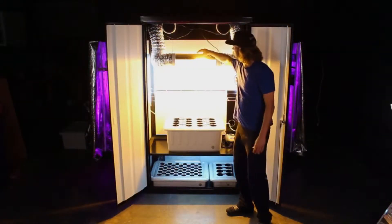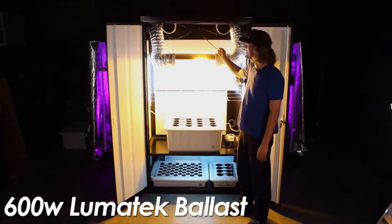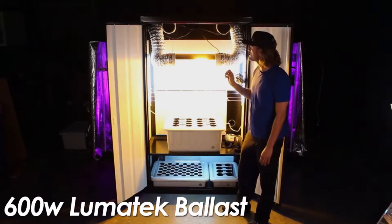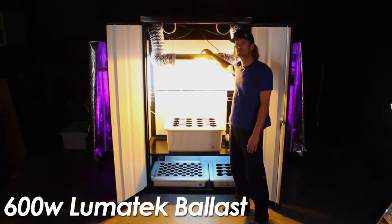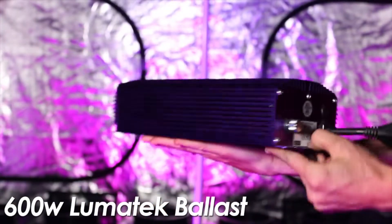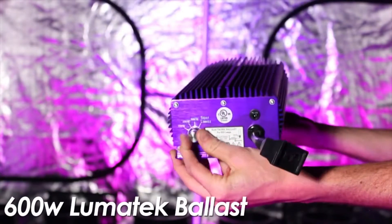The Supernova features a 600-watt Lumatek dimmable ballast that goes from 400 to 430 up to 600 watts. When your plants are small, you can keep it on 400, and with the same bulb and a simple turn of a dial, you can raise this light all the way up to 600.